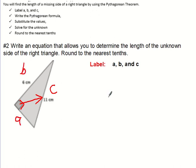So then from here, I'm going to write the Pythagorean theorem formula down. That's my second step. Write the formula: A squared plus B squared equals C squared.